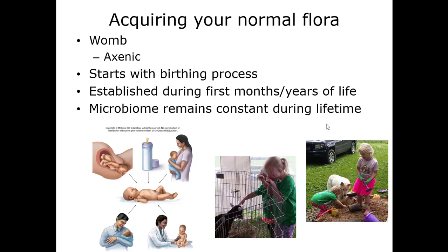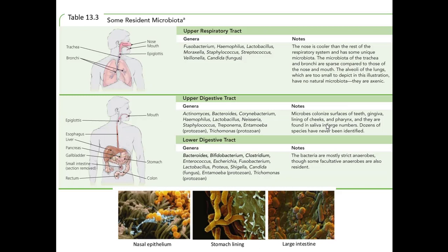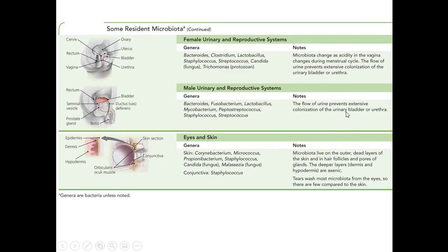This is showing examples of organisms that are with you right now. In your upper respiratory tract you've got a whole bunch of organisms; your upper digestive tract has many; your lower digestive tract has these organisms — sometimes the same but different environments. The female reproductive tract and urinary tract have their organisms; the male has some of the same but different environments lead to different organisms. In the eyes and skin you've got lots of organisms. You are never alone — you have lots of different organisms living on and in you right now.